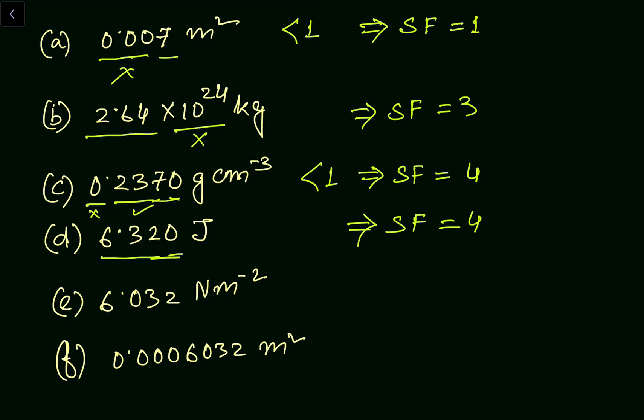In the fifth part, the digits 6, 3, and 2 are non-zero digits, and the zero is in between non-zero digits, so that zero is also significant. Therefore, significant figures equals four.